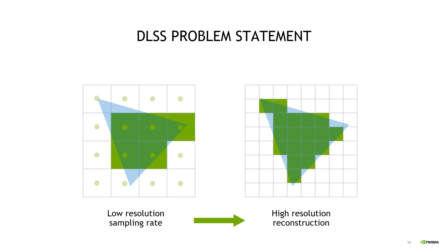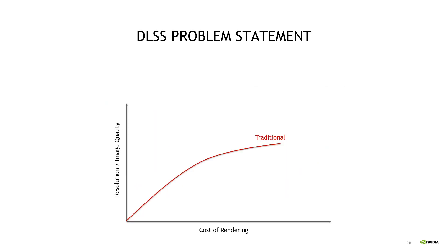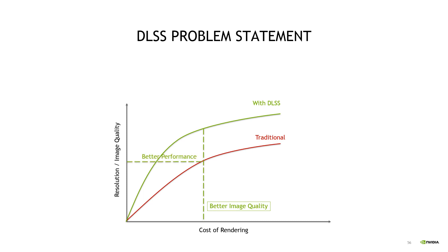With that background in mind, we can look at the problem statement of DLSS. What DLSS tries to achieve is to get the same high-resolution reconstruction quality using only input taken from a low-resolution sampling rate. Both things matter because reconstruction quality directly correlates to final image quality, and sampling rate directly correlates to performance. In graphics, to get better image quality you either have to render at higher resolution or use more expensive rendering techniques. With DLSS, we hope to increase the efficiency of the rendering process — getting better image quality at the same rendering cost, or better performance at the same image quality.